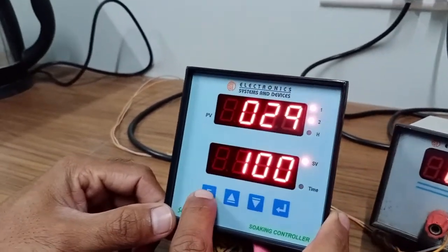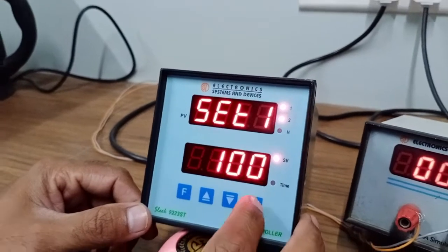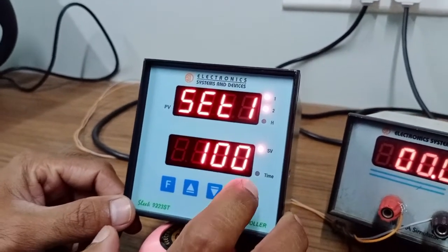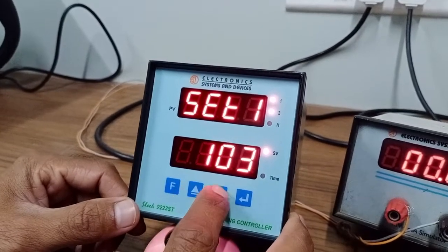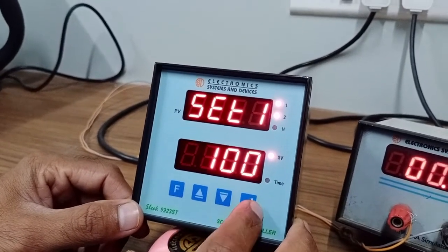For settings we have to press the F key. This is set point 1. If you enter you can change the reading for the set point.